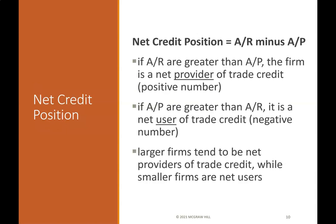Net credit position equals accounts receivable minus accounts payable. If accounts receivable are greater than accounts payable, the firm is a net provider of trade credit — a positive number. If accounts payable are greater than accounts receivable, the firm is a net user of trade credit — a negative number. Larger firms tend to be net providers of trade credit, while smaller firms are net users.